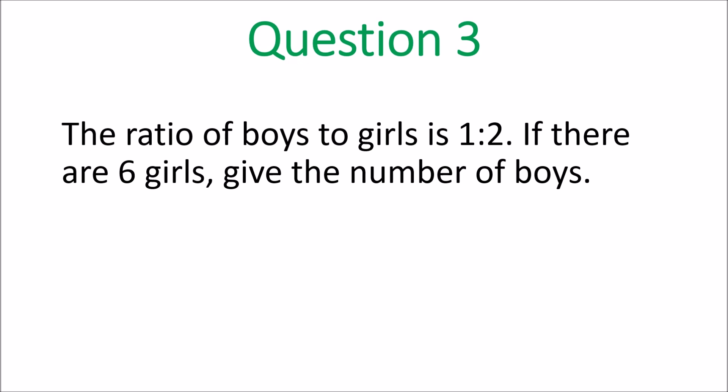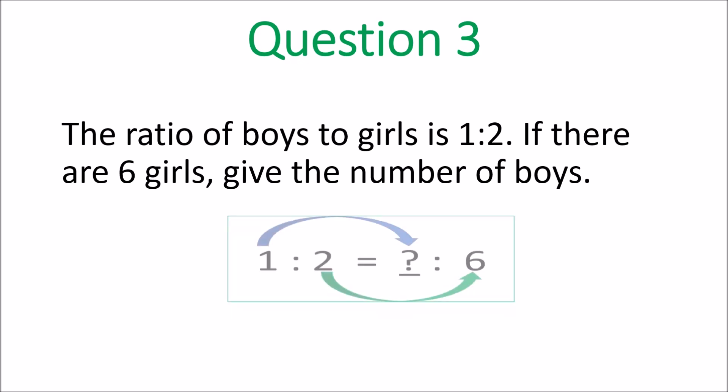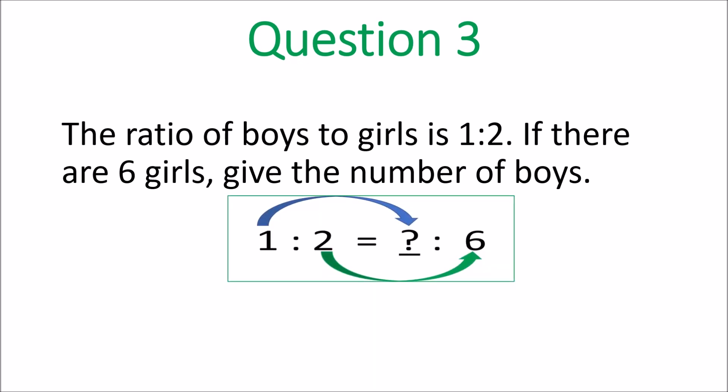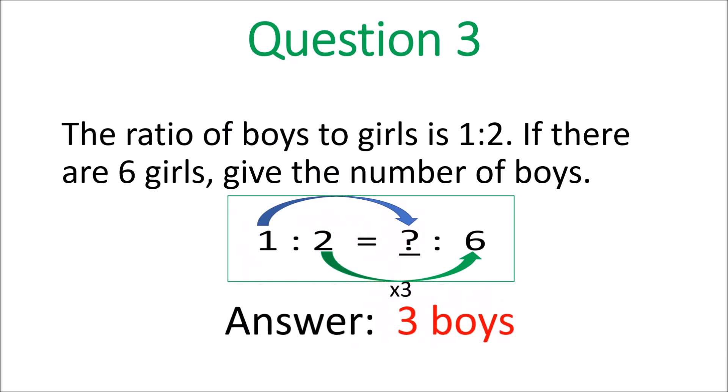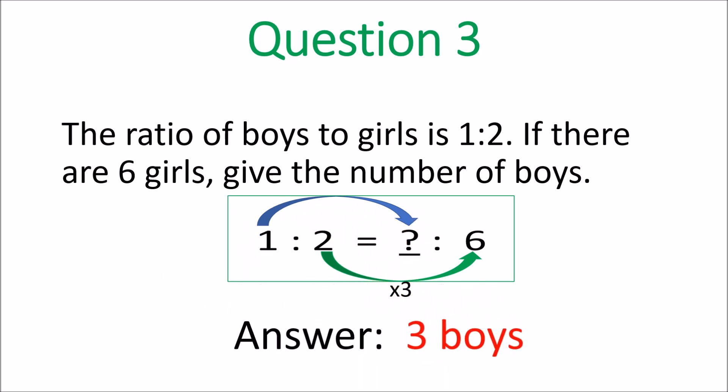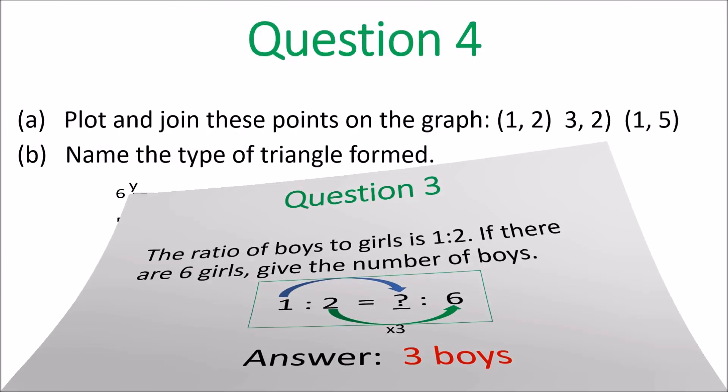Question three: the ratio of boys to girls is one to two, and there are six girls. Match it up — two goes to six. How do you get from two to six? You multiply by three. So multiply the other ratio by three as well: one times three equals three. The answer is three boys.